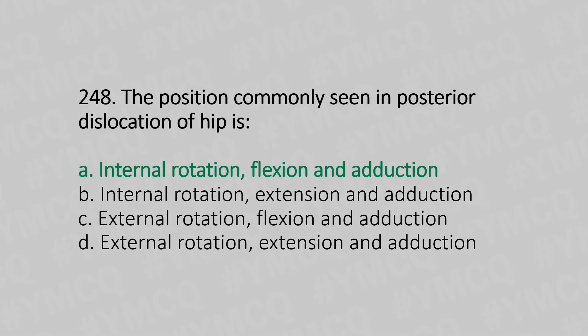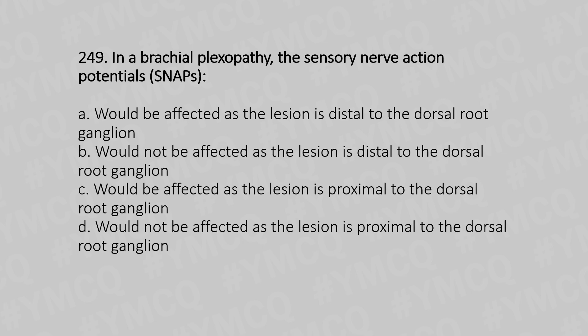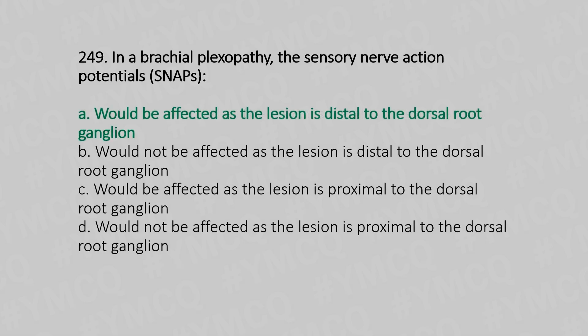Question 249: In brachial plexopathy, the sensory nerve action potential — Option A: would be affected as the lesion is distal to the dorsal root ganglion. Option B: would not be affected as the lesion is distal to the dorsal root ganglion. Option C: would be affected as the lesion is proximal to the dorsal root ganglion. Option D: would not be affected as the lesion is proximal to the dorsal root ganglion. The answer is Option A, would be affected as the lesion is distal to the dorsal root ganglion.